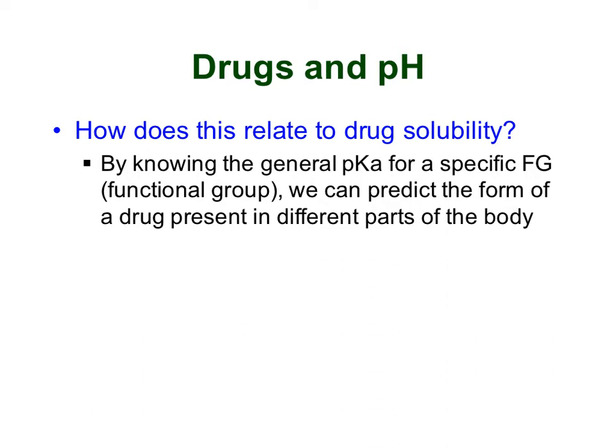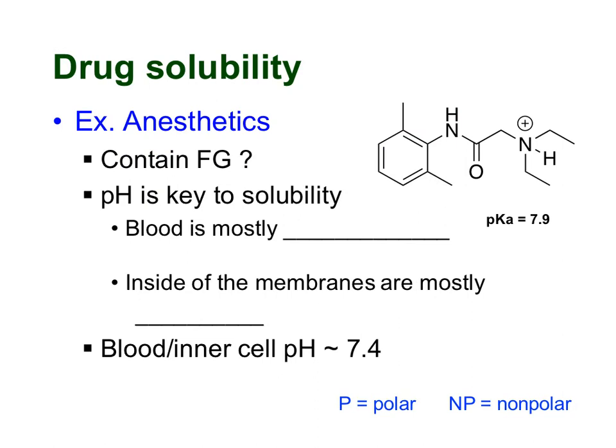At this point, you know a lot of the pKa's for different functional groups because they were given on the chart for the 'some pKa's' activity, so hopefully you'll recognize some of those as we go through. Let's start with an example of an anesthetic — this is something that's a numbing agent for your body. This molecule contains several functional groups. Basically, all you have to know for now is that functional groups are anything that's not a carbon-carbon single bond or a carbon-hydrogen single bond, so double bonds would count and anything else would count. These are our three functional groups: here we have an aromatic, here we have an amide, and here we have an amine.